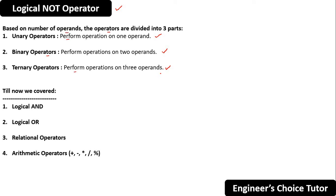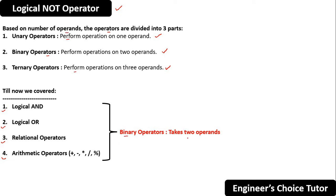Till now we covered logical AND, logical OR, relational operators, and arithmetic operators like plus, minus, multiplication, division, and modulo. All of these are binary operators because in all cases we were taking two operands. If you go back and watch those videos you will realize we were taking two operands everywhere.